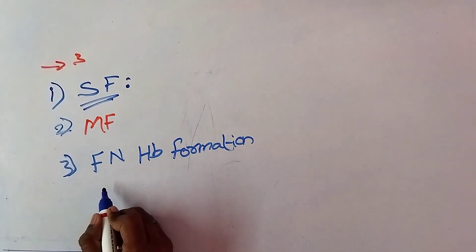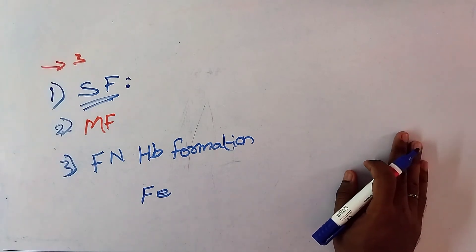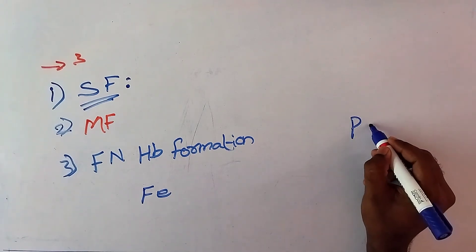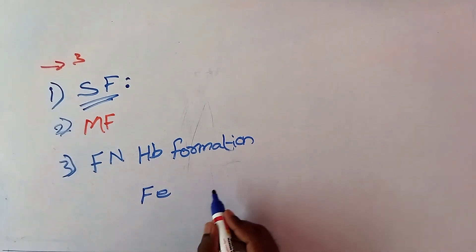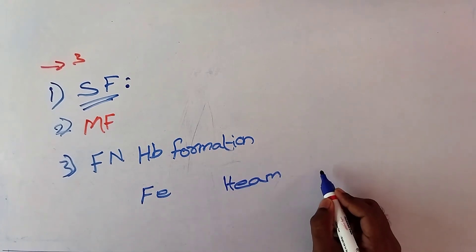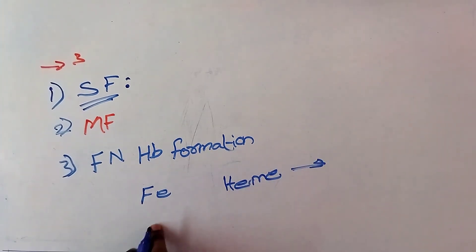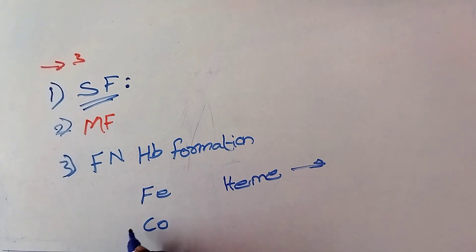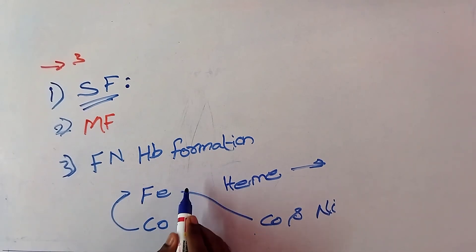The next factor is iron. Iron is necessary after the formation of the protein part, globin. Iron helps in the formation of the heme part of hemoglobin. After iron, copper also helps in the formation of iron utilization. Copper and nickel — these two metals are essential for the utilization of iron during hemoglobin formation.